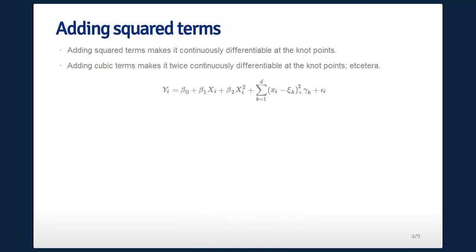If you add some squared terms, then it turns out that not only is the function continuous at the knot points, you get a derivative at the knot points. And if you add cubic terms, you get two derivatives at the knot points. If you add fourth order terms, you get three derivatives at the knot points, and so on. And what the derivatives mean is it looks curvy, not sharp and jagged. So here now we just have beta_0 plus beta_1 xi plus beta_2 xi squared, and then instead of doing just the plus function, we raise it to the power 2, where here (a)_+^2 means a squared, if a is greater than 0, and 0 otherwise.